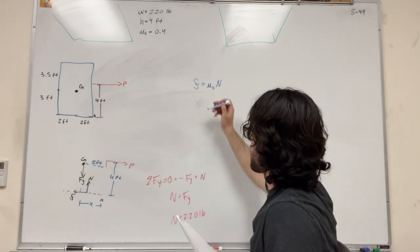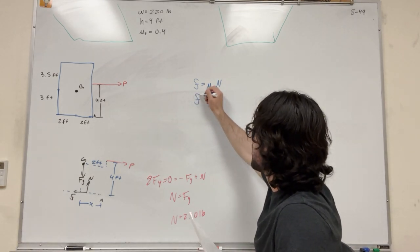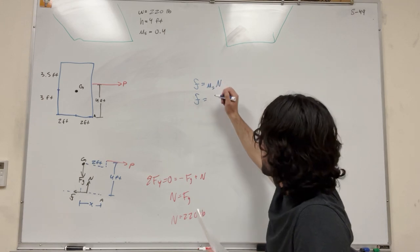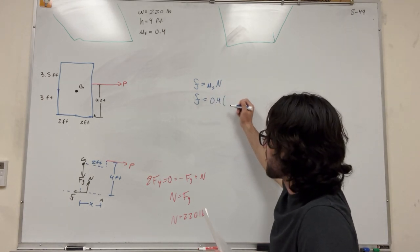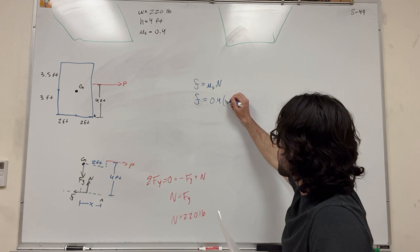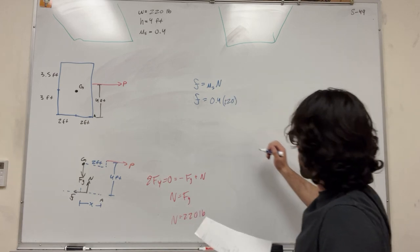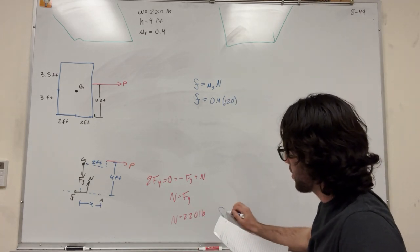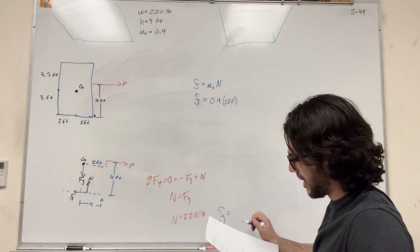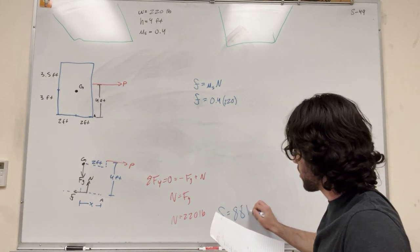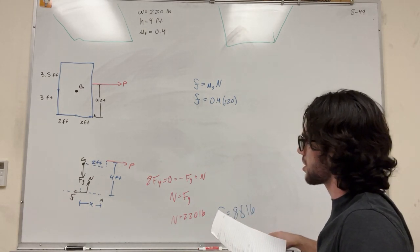So then we can basically plug it in right here. So let's go back to our friction. Friction is equal to the coefficient of static friction, 0.4 times the force normal, 220. So then you're going to find that the friction is basically 88 pounds. Or that's the maximum force that it can hold on to.